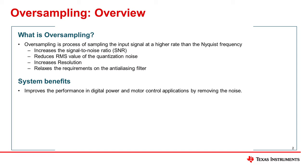Oversampling can be especially beneficial to digital power converter applications. These applications typically involve the use of switching power converters, which tend to introduce high-frequency noise into the microcontroller's subsystems that is difficult to filter. The noise introduced by these switching converters can be coupled into the ADC signal input, the ADC voltage reference, or other sub-circuits within the ADC, leading to a degradation in signal-to-noise ratio.